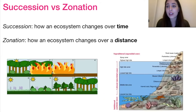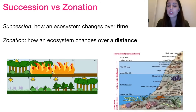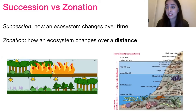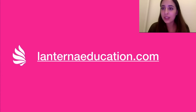Finally, succession and zonation are important but often confused concepts. Succession describes how an ecosystem changes over time — for example, how a community reestablishes itself after a forest fire. Zonation describes how an ecosystem changes over a distance — for example, how communities change across increasing height along a shore. These are very different processes, but many students mix them up. That concludes our topic two episode — click on topic three to learn about biodiversity.